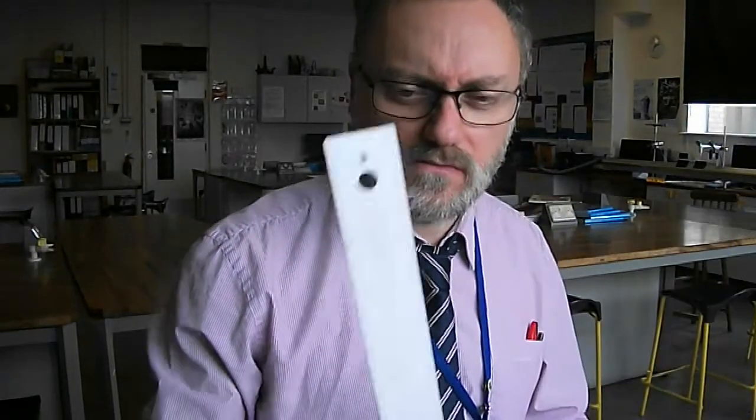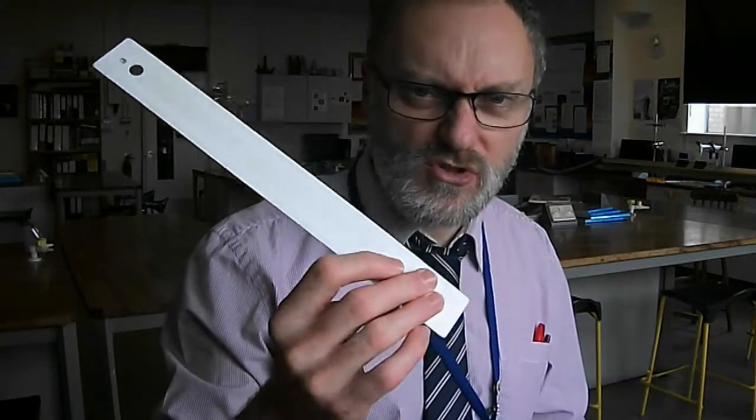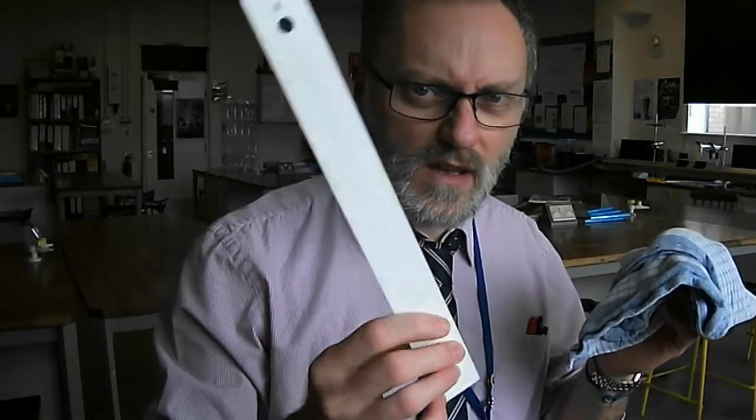You're going to need some cloth, a jumper or something. I've got a tea towel, some plastic. You can try a variety of different materials. I've got a plastic ruler, and you could try a pen or a comb.